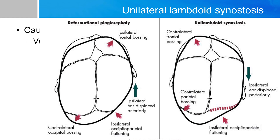This disease needs to be differentiated from another entity called positional plagiocephaly, also known as deformational plagiocephaly. This entity is caused by the baby laying on one side too often, and because the baby's skull is more malleable, the skull will take on a different shape than the symmetric one.